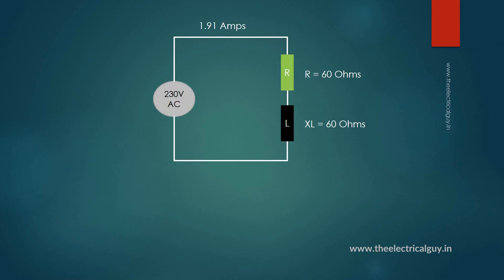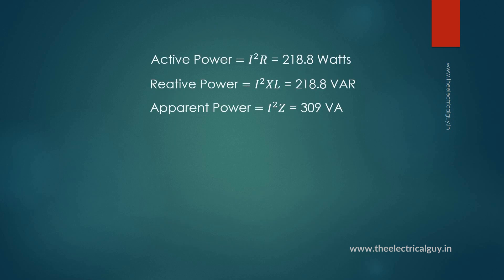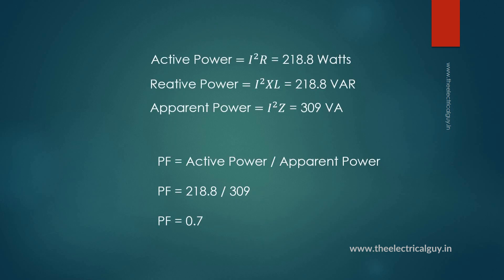Consider the example shown to understand more clearly. We have a 230 volt AC supply connected to a load. The current flowing through the circuit is 1.91 Amps. The active power in the circuit is 218.8 Watts, the reactive power is also 218.8 VAR, and the apparent power is 309 volt Ampere. So if we calculate the power factor of this circuit, we get power factor equal to 0.7.